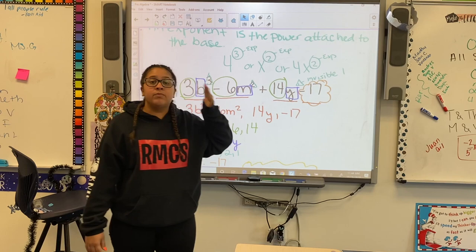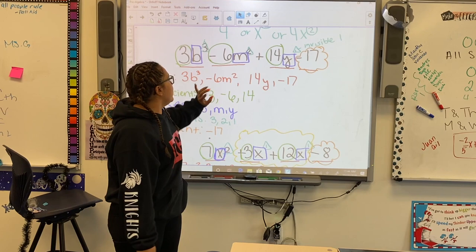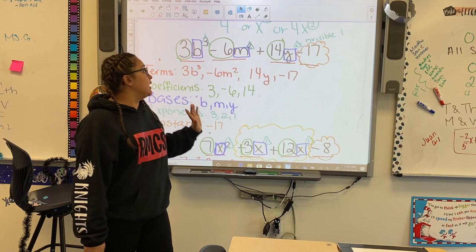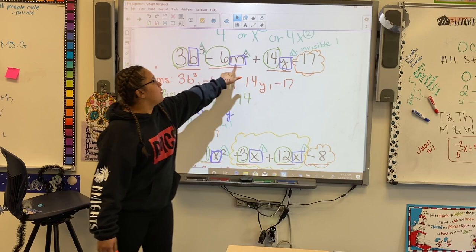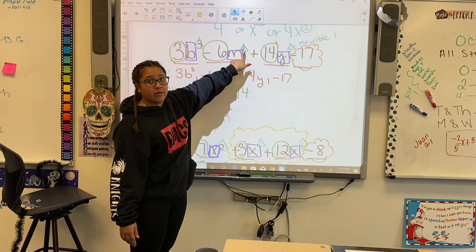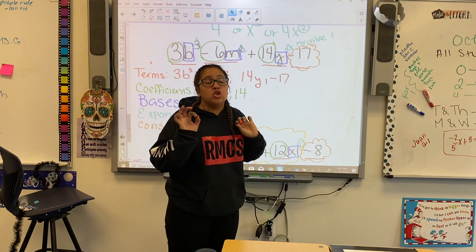Something I really wanted you guys to understand is terms — what are terms? Here we have 4 terms. A term can be just a regular number, a whole number called a constant without a variable. It can be just a variable, a variable with an exponent, a number and a variable, or a number, variable, and exponent. What separates our terms are our plus and minus signs. You do not have to have a variable in order to make it a term. That's really, really important.